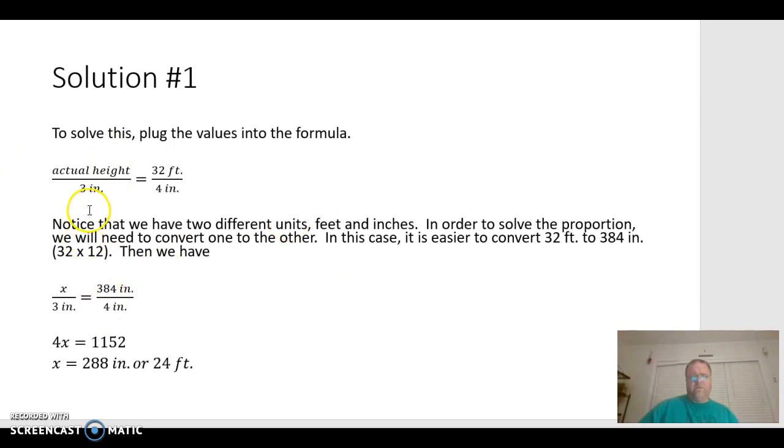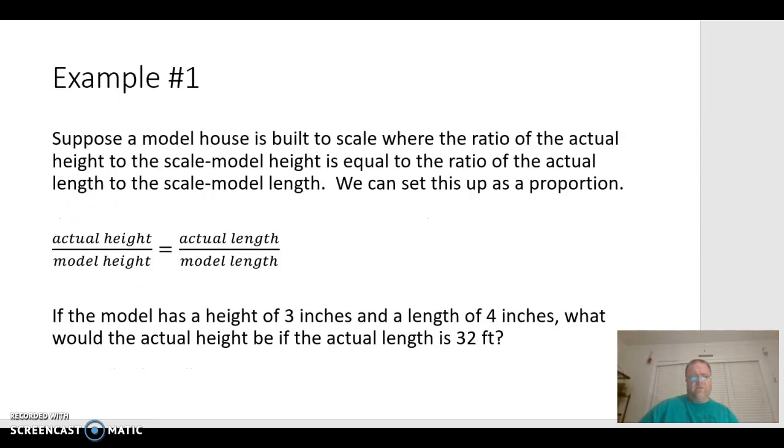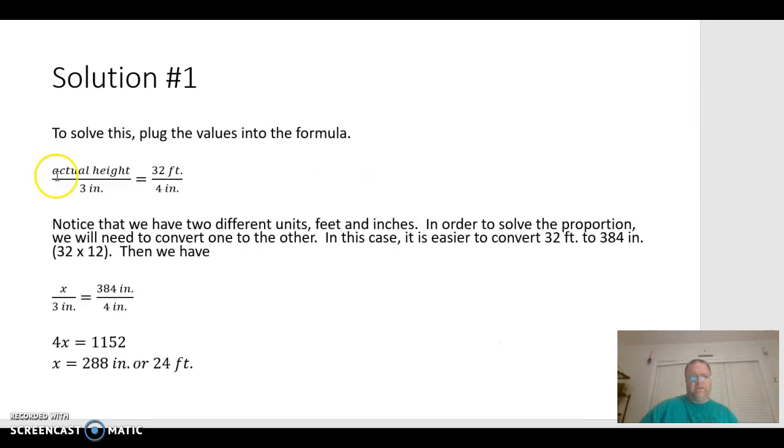Alright. And so, we have the, going back here, we have the actual height over the model height is equal to the actual length over the model length. So, we just kind of plug those three figures in there. We have the 3 inches here, the 4 inches there, the 32 feet here. And this is what we're going to be solving for, the actual height, because that's our unknown here. And we talked about this last section, but one requirement we need for a ratio is that it's in the same units. So, you can notice here that these units are different. I have feet on top and I have inches on bottom. So, I can really convert either way.